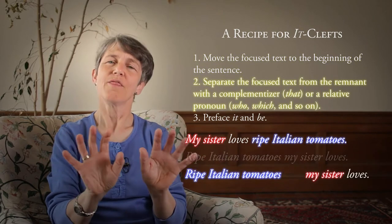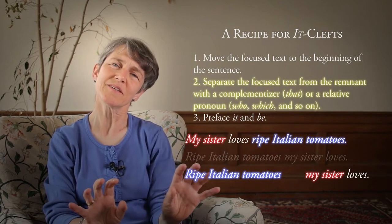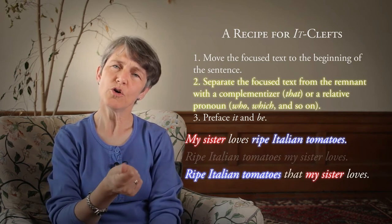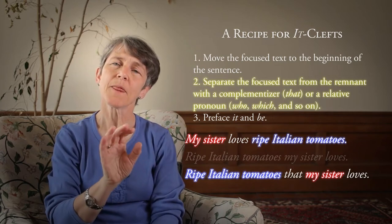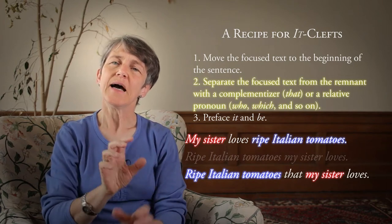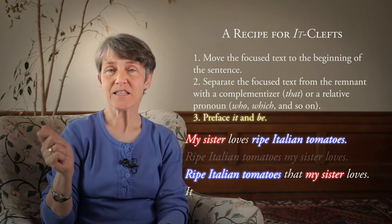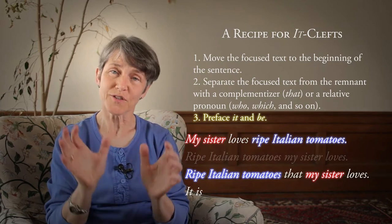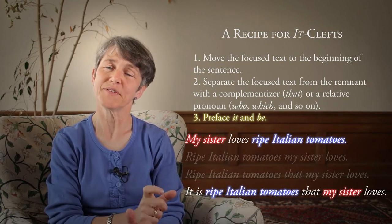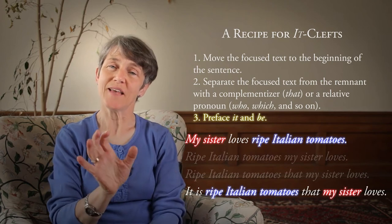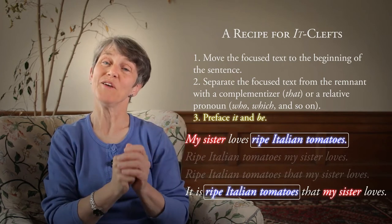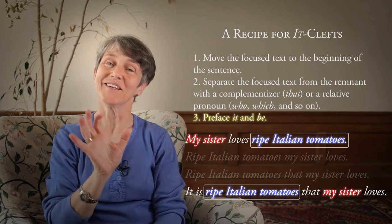Then we have to separate the part that we've moved from the remnant of the sentence. We separate it either with 'that' or with the relative pronoun 'who' or 'which,' depending on what's appropriate. So you'll wind up with 'ripe Italian tomatoes that my sister loves.' Then the other part of the cleft is 'it' and the form of the verb 'be.' So when you preface those, you'll wind up with: 'It is ripe Italian tomatoes that my sister loves.' That's a perfectly grammatical sentence, and is evidence that 'ripe Italian tomatoes' is a constituent in the original sentence: 'My sister loves ripe Italian tomatoes.'